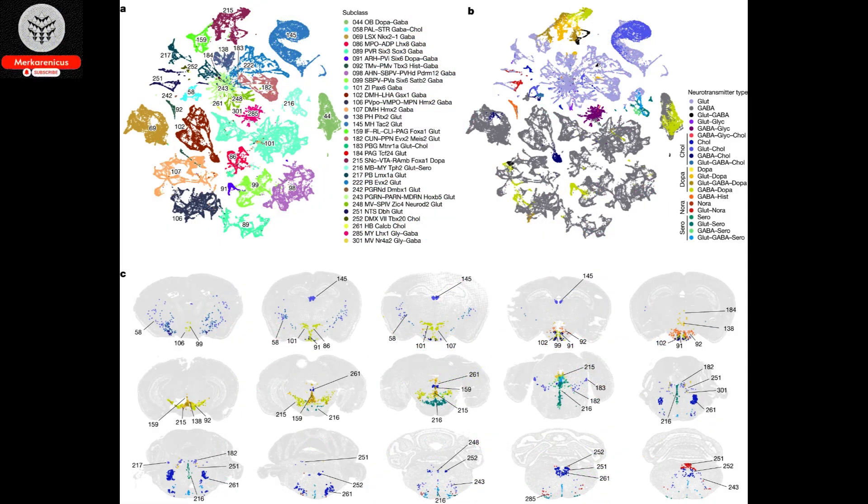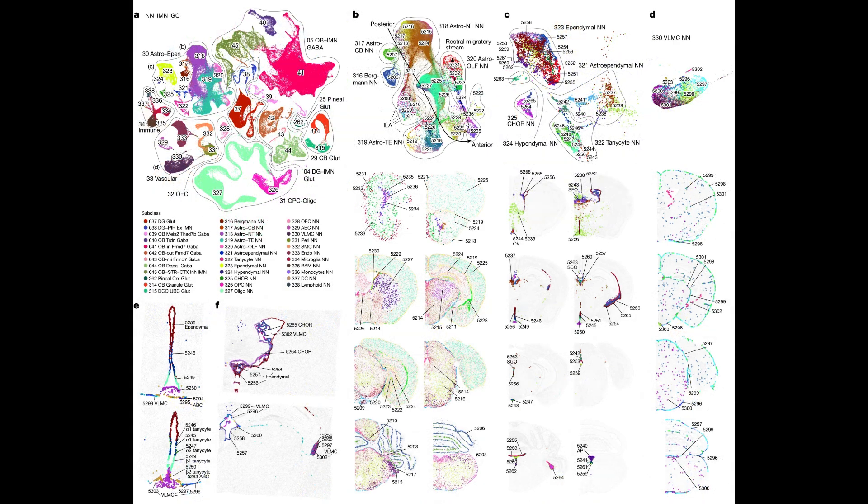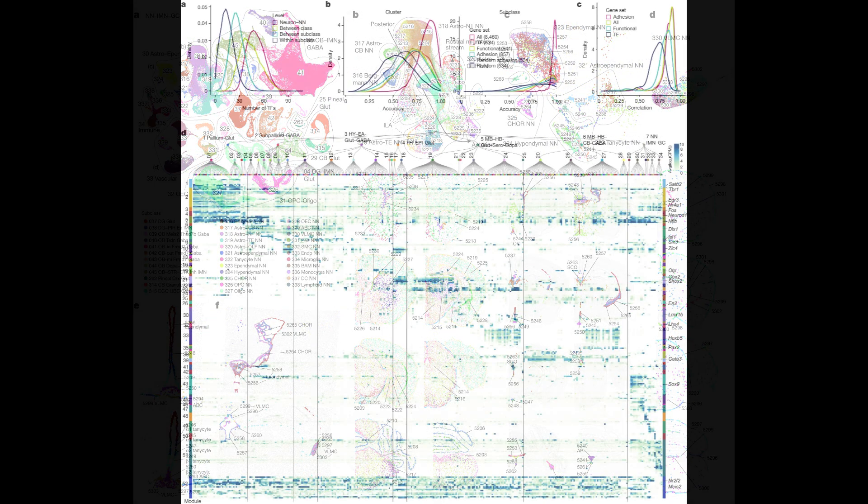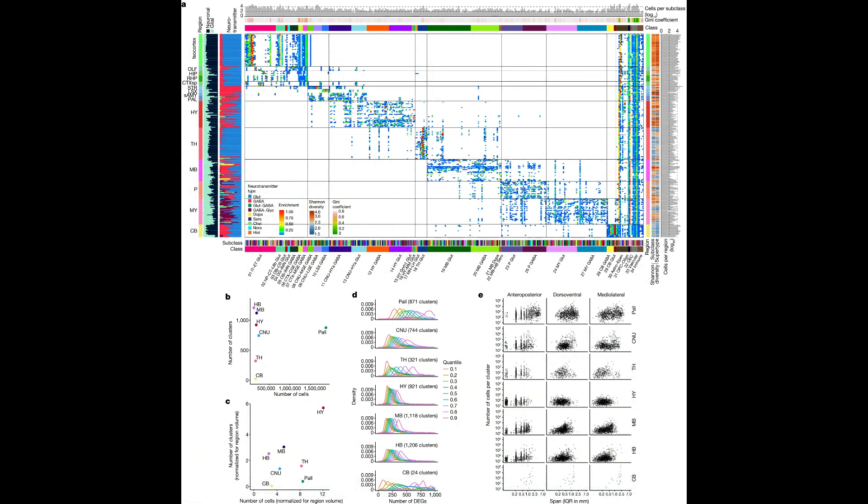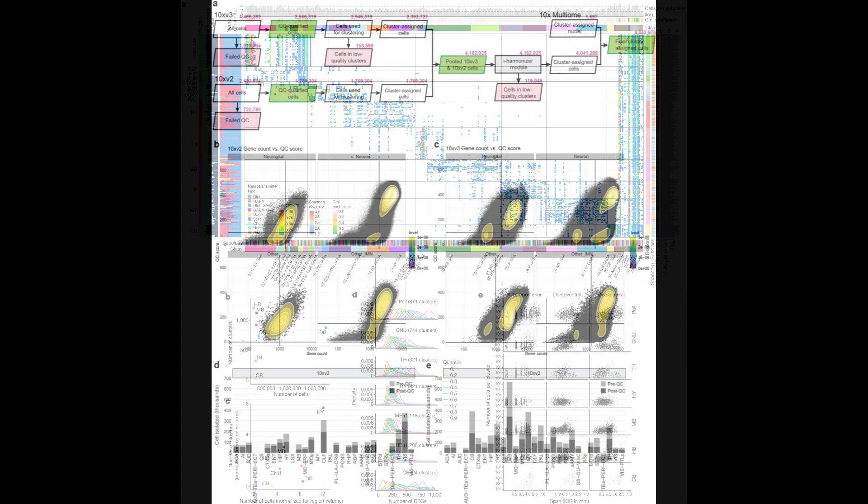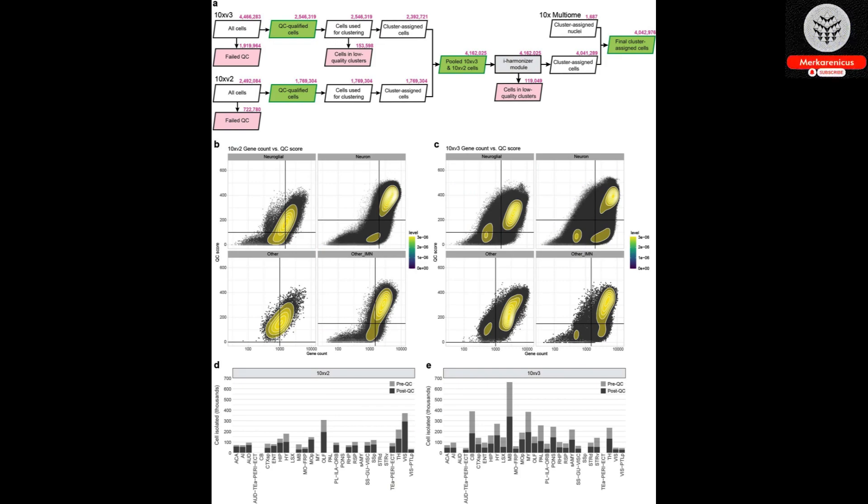For the first time ever they have successfully created a comprehensive cell atlas of an entire mammalian brain. This remarkable feat involves mapping over 32 million cells in the mouse brain, providing detailed information on their type, location and molecular characteristics. Additionally, the atlas offers insights into the connectivity between these cells.